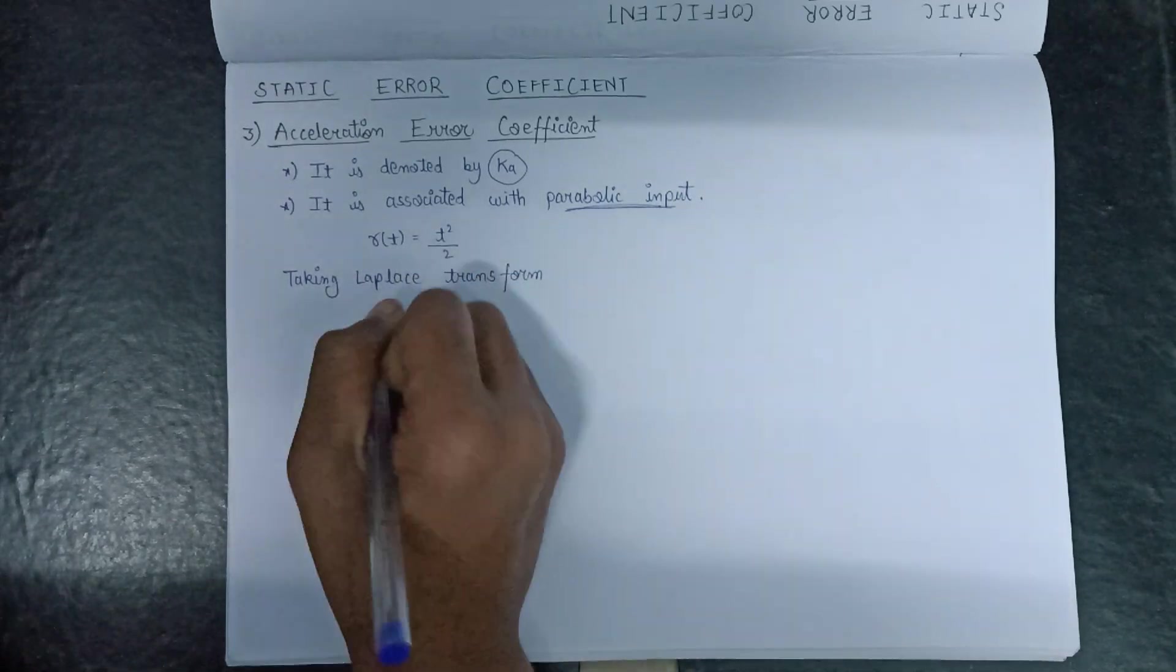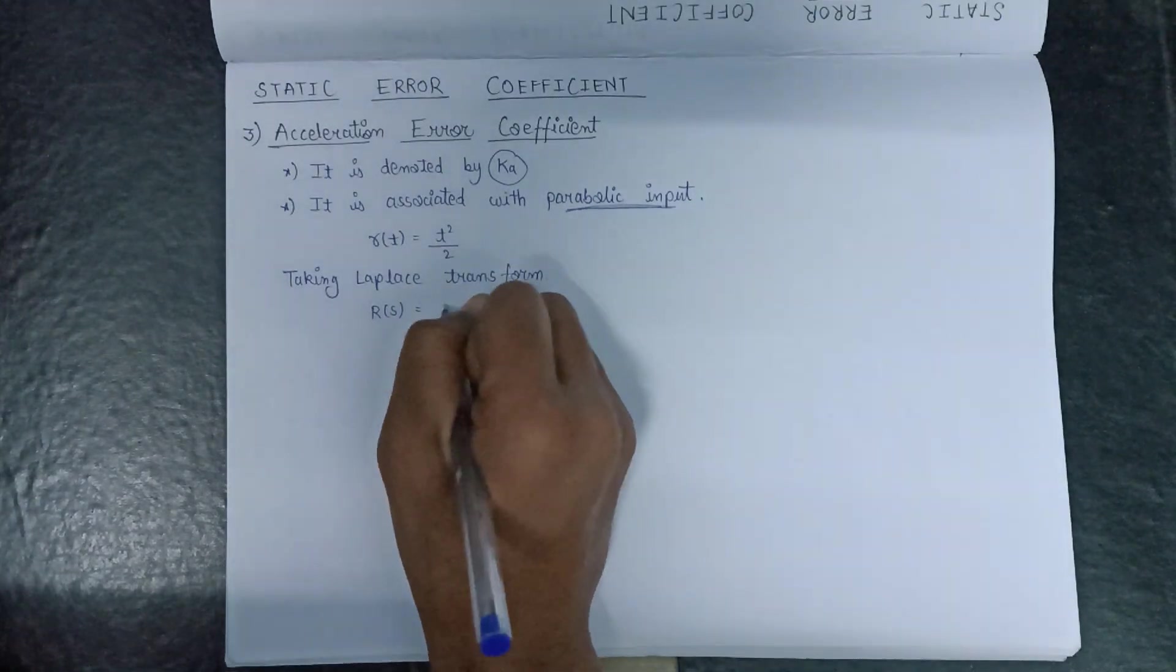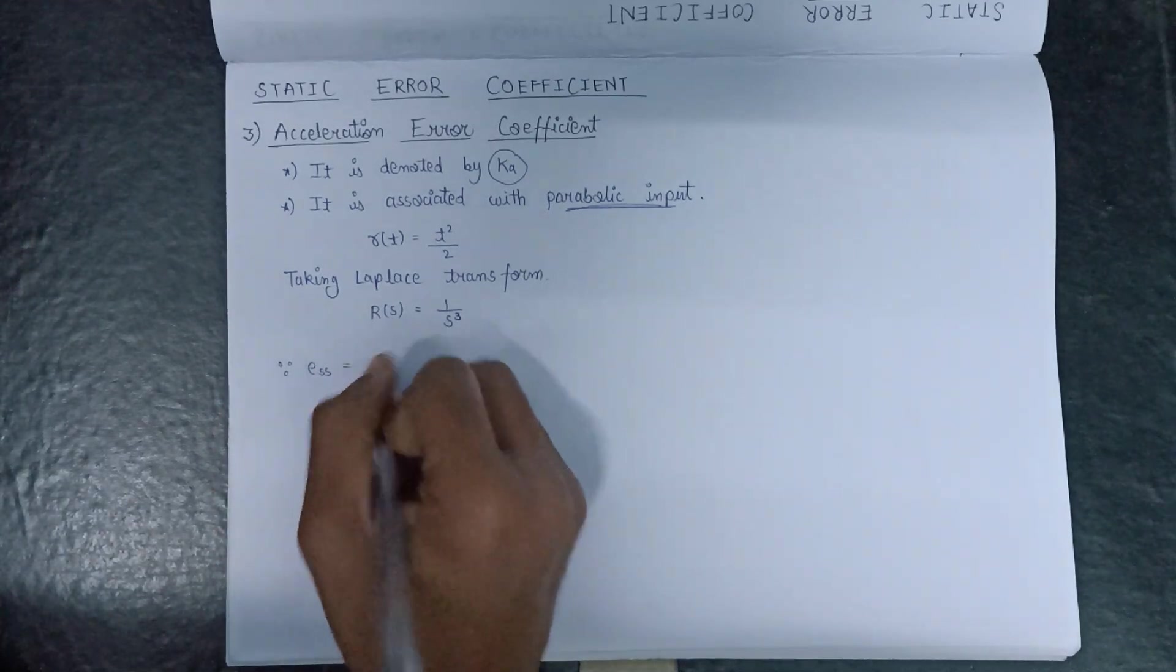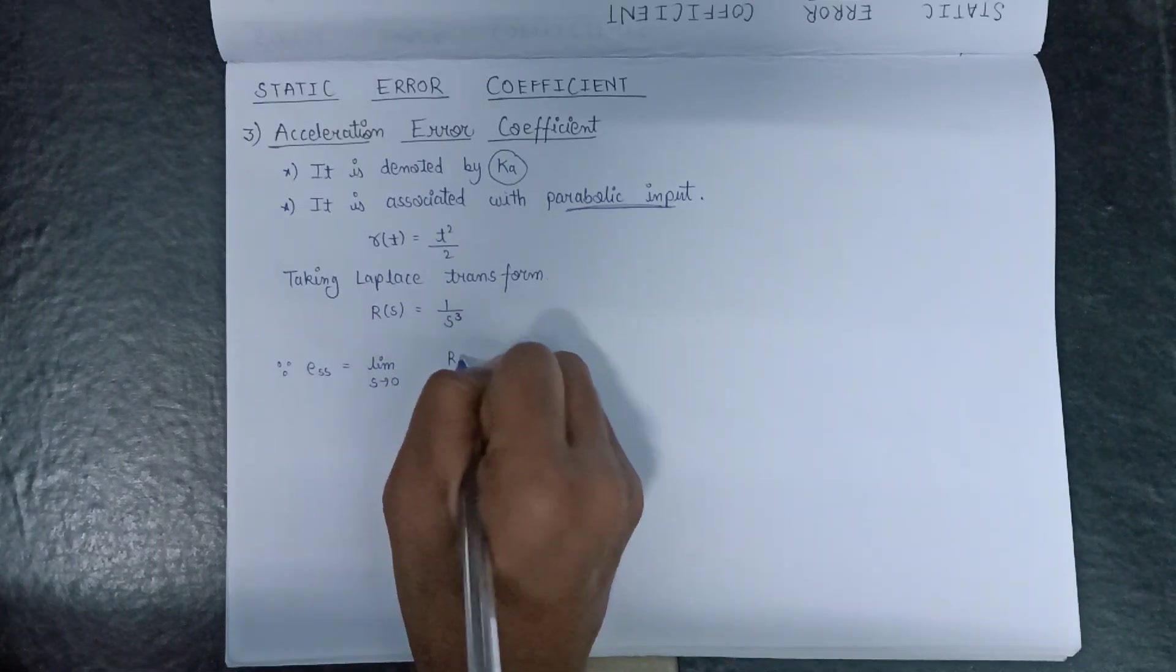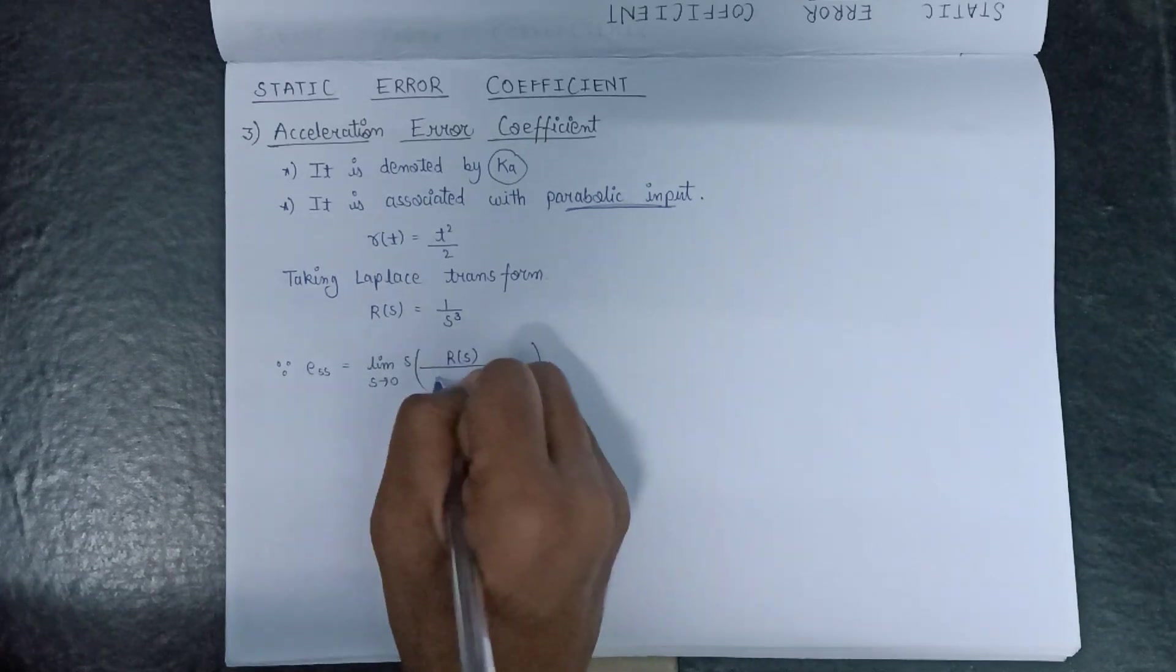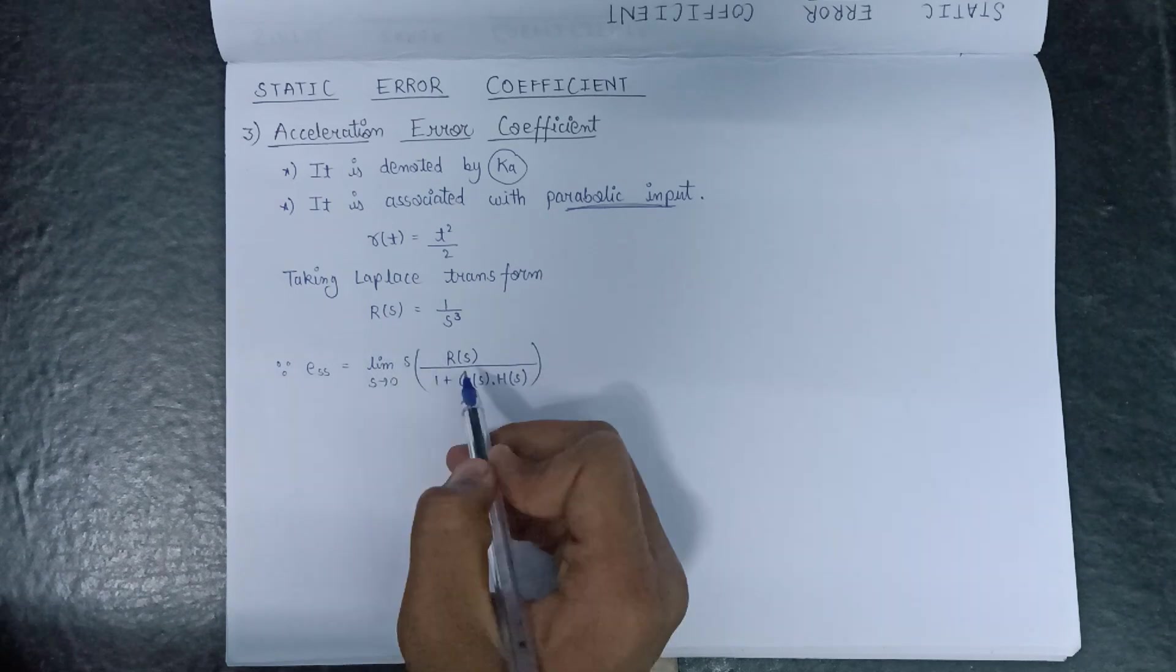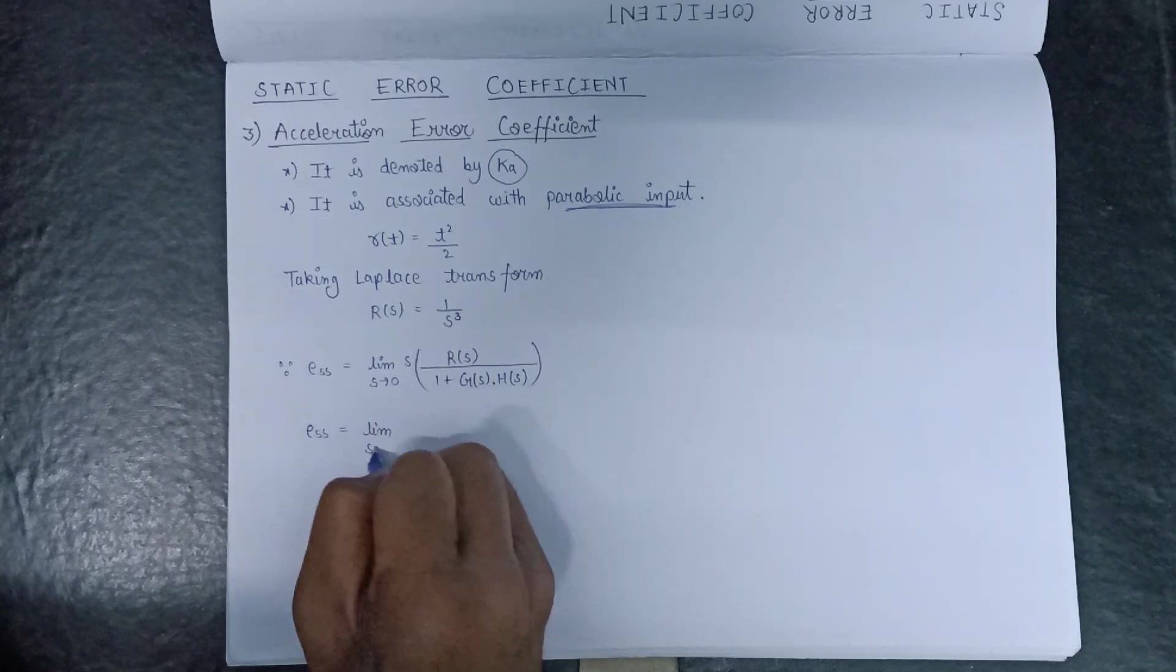we get R(t) will be converted into R(s), and t²/2 Laplace transform will be 1/s³. Since the formula for the steady state error E(s) is given as limit s tends to 0, R(s) into s/(1 + G(s)·H(s)), so on putting the value of R(s) here,